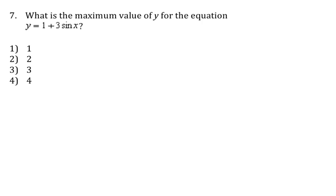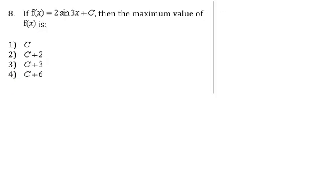Number 7: what is the maximum value? The amplitude is 3 because it's the coefficient in front of sine, so we go up and down by three — but from where? From one. So the maximum will be four, because from one if you go up by three, you get four.